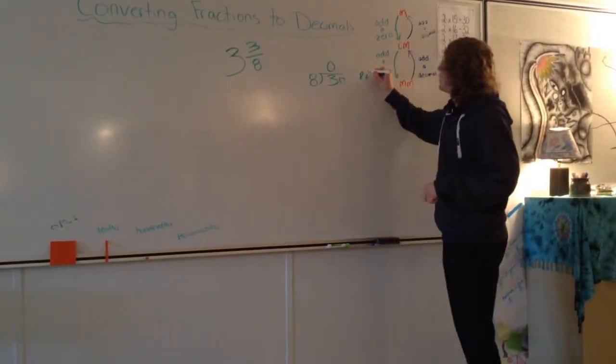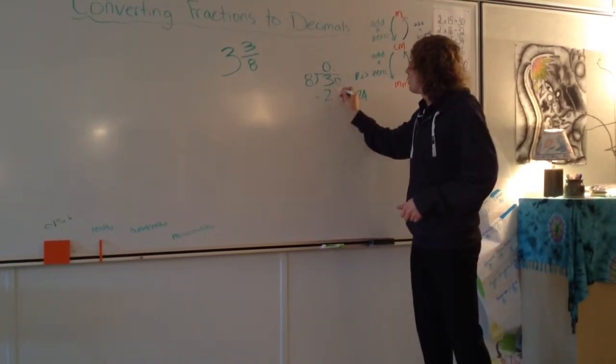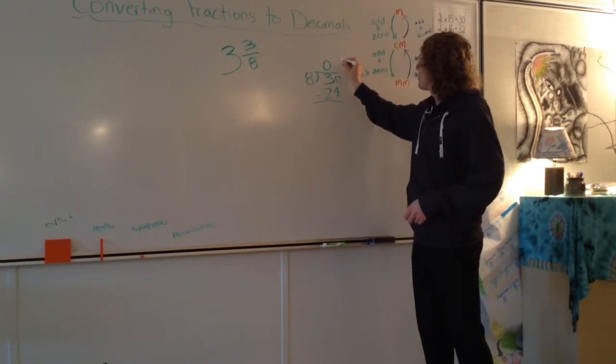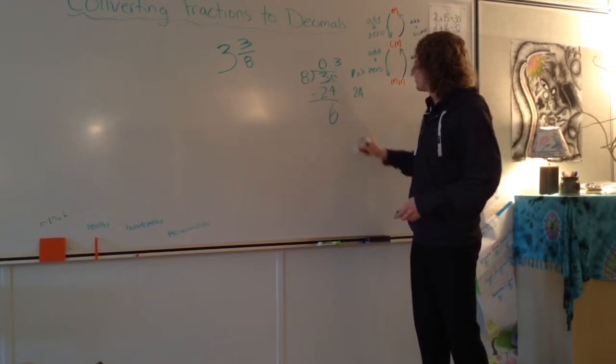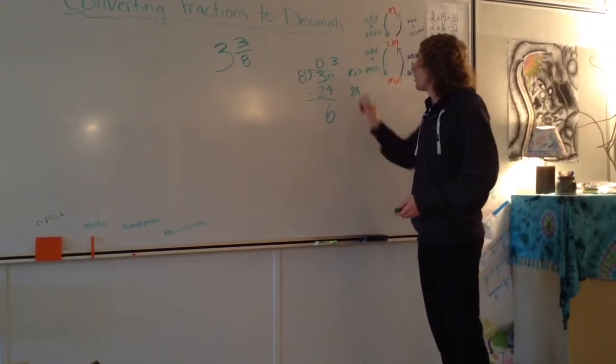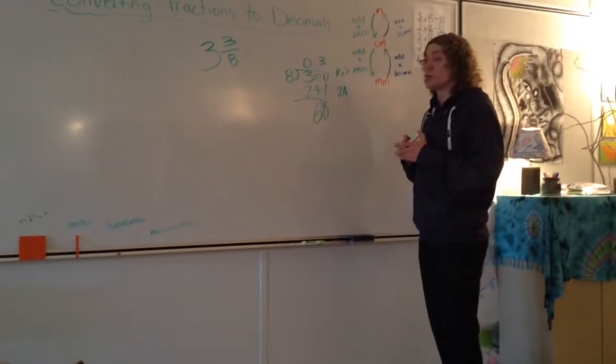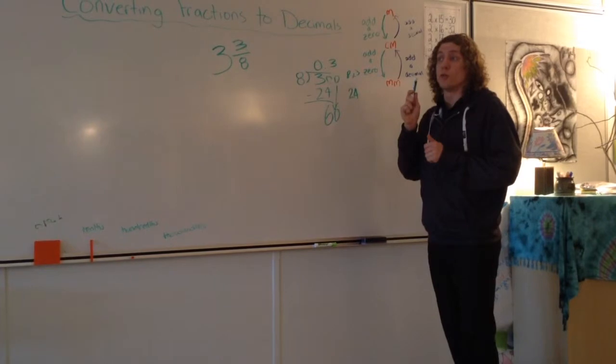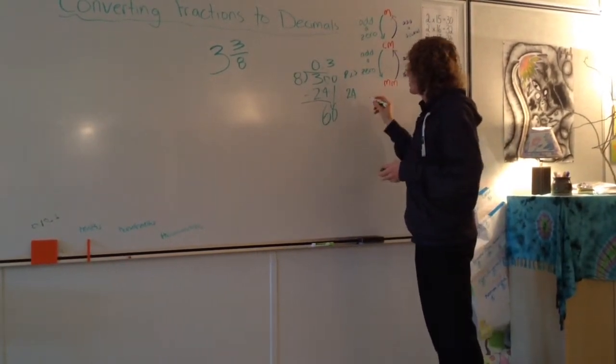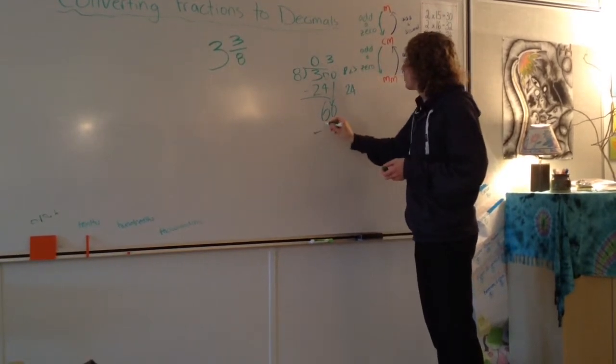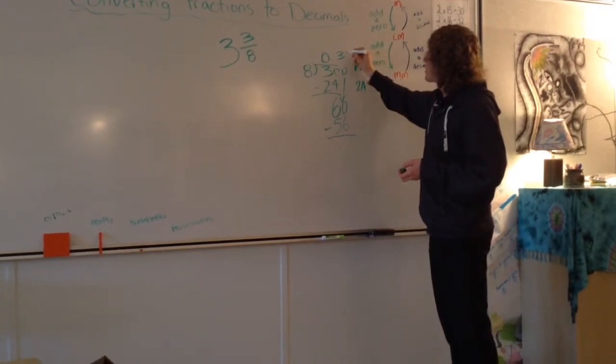That number I'll plop at the bottom here, and I'll put that 3 right up here. Now I'll subtract these two numbers together, which will give me 6. I can't put it into 6, I'll grab another zero, put it down there. 8 goes into 60, 8 goes into 60 seven times with the remainder of 4. 8 times 7 equals 56. You'll pop the 56 down here and you'll put the 7 up here.